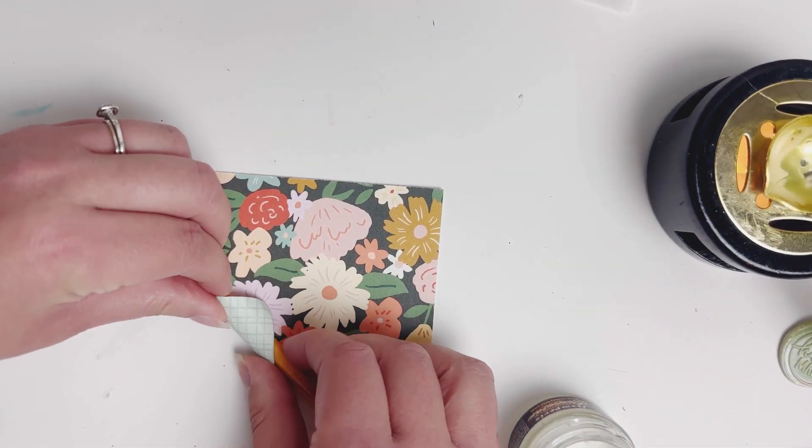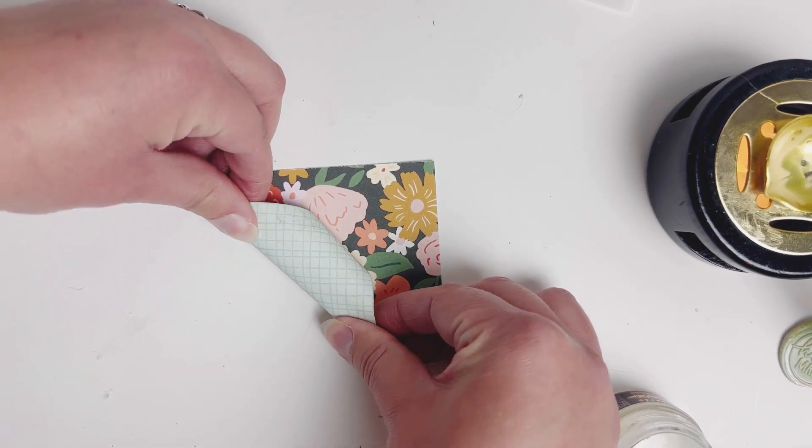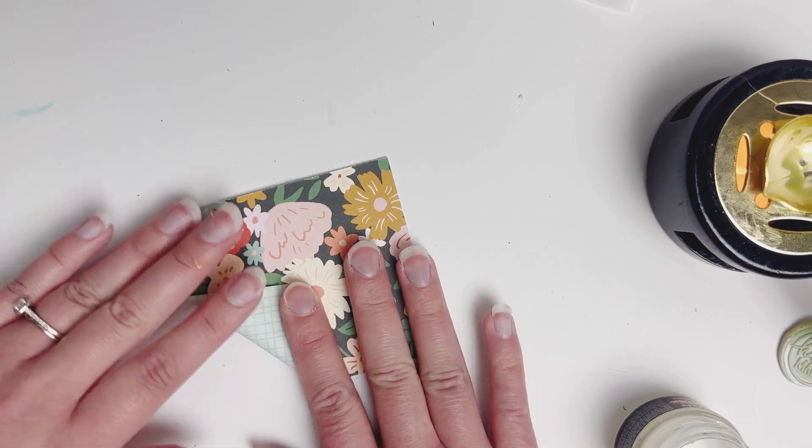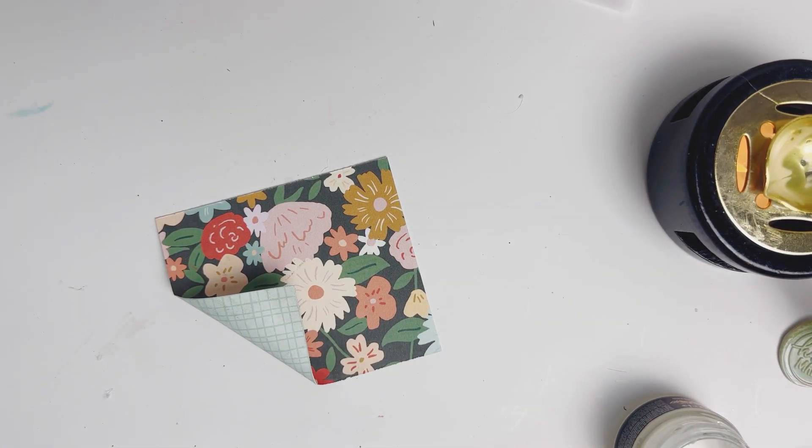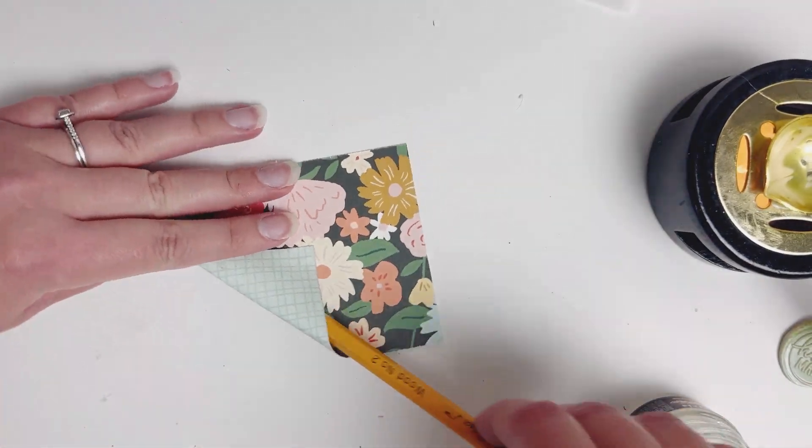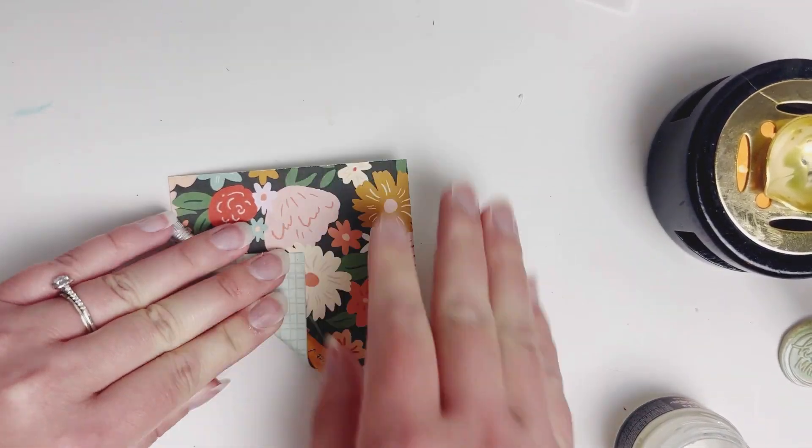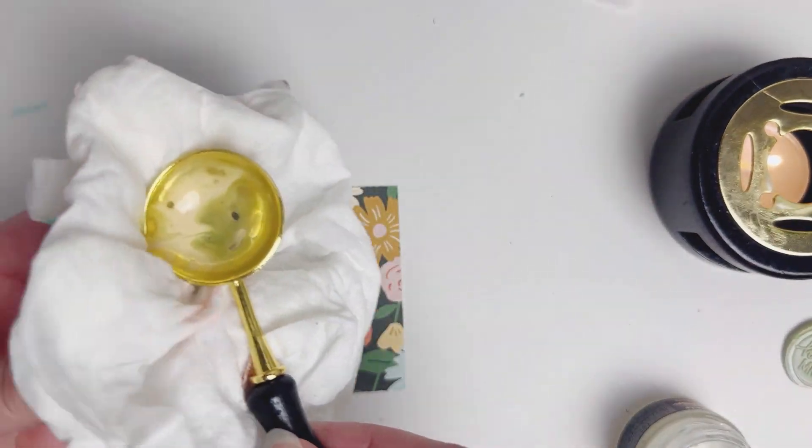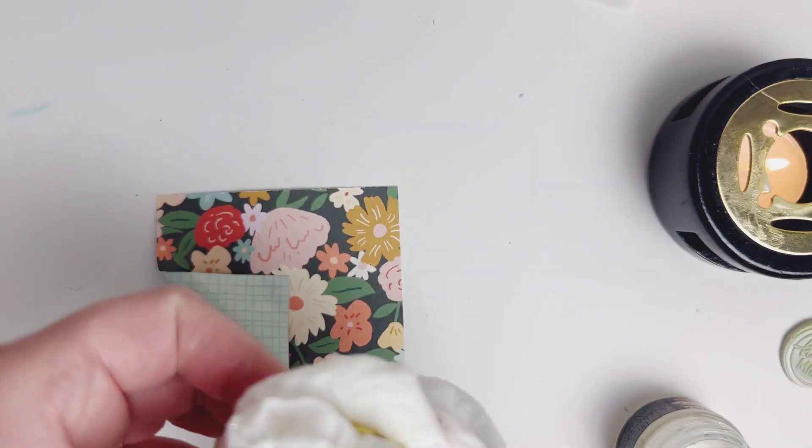So here I'm going to show you another fun technique. This is a super fun technique if you have some pattern paper that is double-sided and you want to see both sides. So I'm just grabbing a pencil and rolling up one corner of my paper. And then I am getting some cherry tape adhesive and I am gonna glue that down first. So you want to make sure everything is secure before you put your wax seal down.